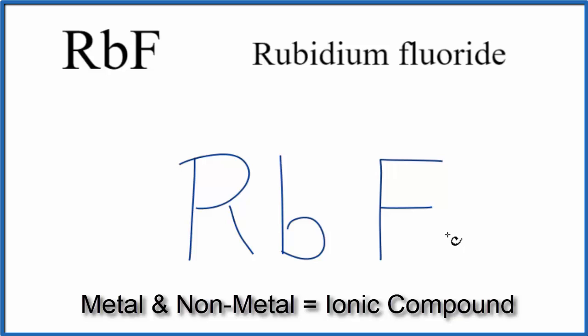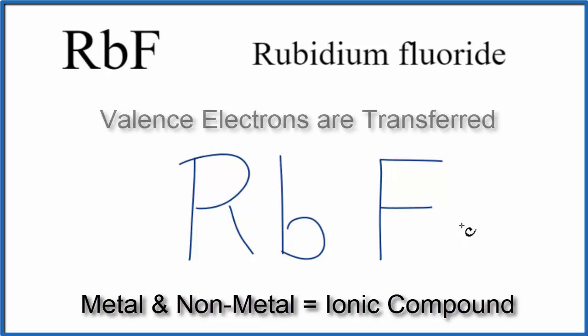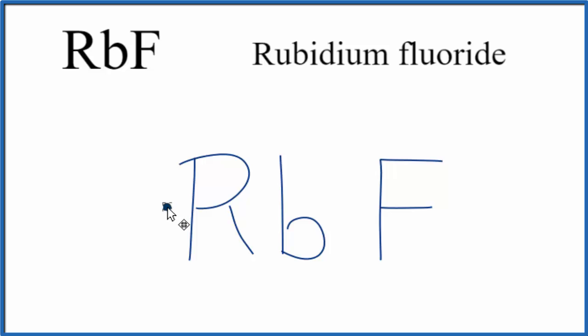So when we do this, we're going to have an ionic bond. And in an ionic bond, the electrons are transferred from the metal to the non-metal. So rubidium is in group 1 on the periodic table, so it has 1 valence electron.